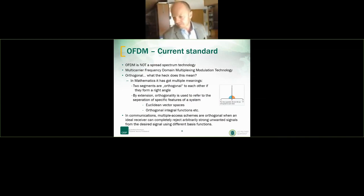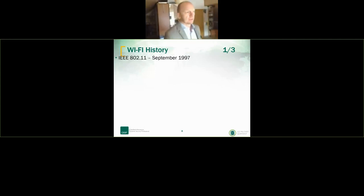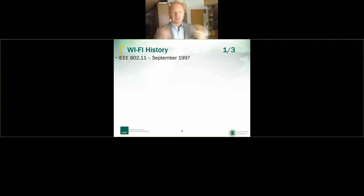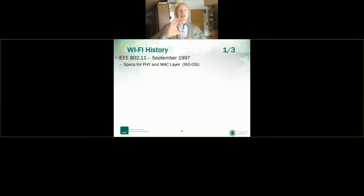To understand Wi-Fi and to find out what's going on from the security point of view, we need to understand the history. Wi-Fi 802.11 is the base standard — everything is related to 802.11. It was introduced by the IEEE committee in 1997 and specifies the physical and MAC layers of the seven-layer OSI model.